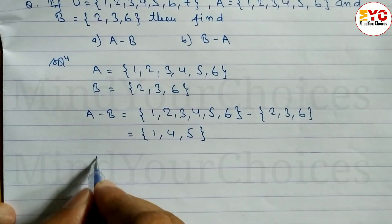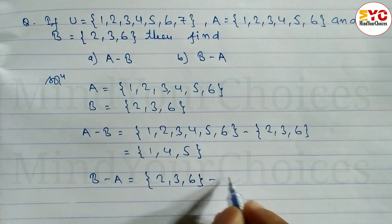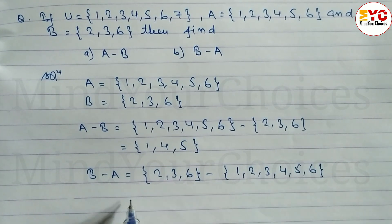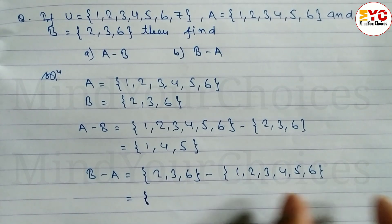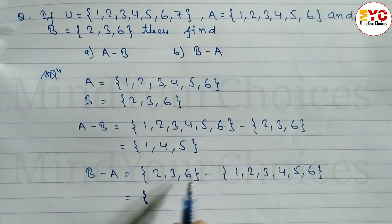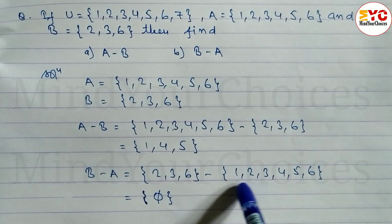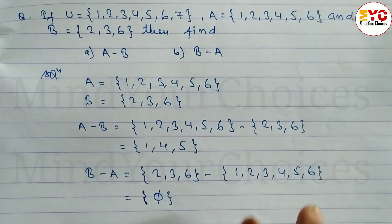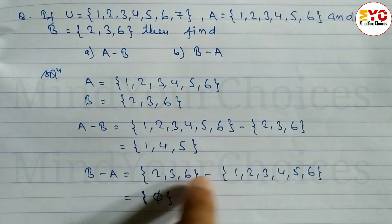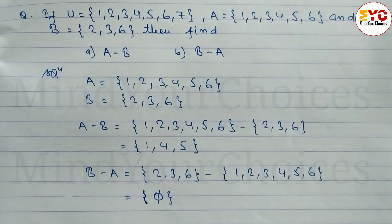Similarly, find B minus A. Set B = {2, 3, 6} minus set A = {1, 2, 3, 4, 5, 6}. We are subtracting set A, so elements remaining in set A we ignore; elements remaining in set B we write. 2 cancels. 3 cancels. 6 cancels. Nothing is remaining in set B, so B minus A equals the empty set. Hope you understand this video. For more videos please subscribe and hit the bell button. Thanks for watching till last.